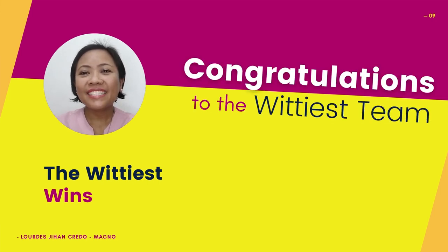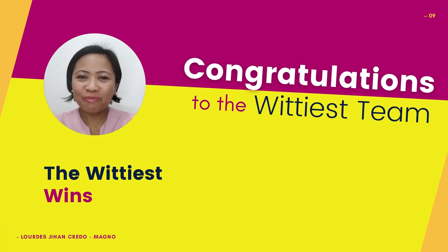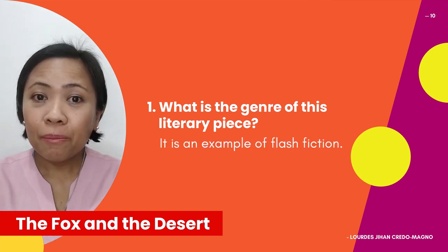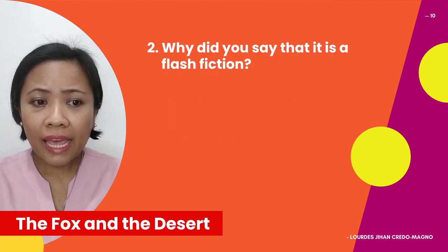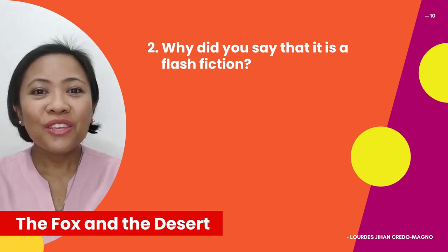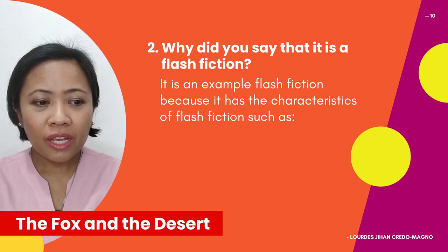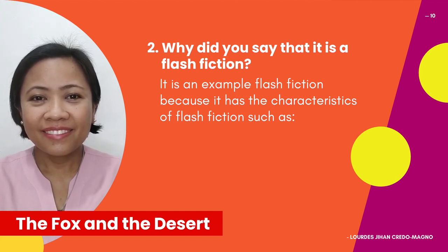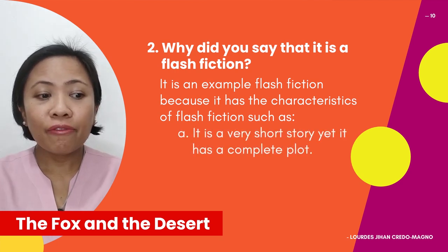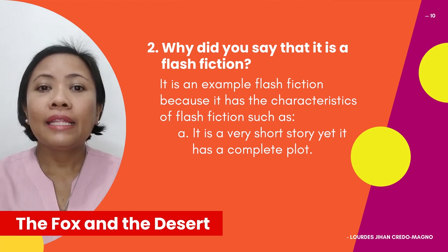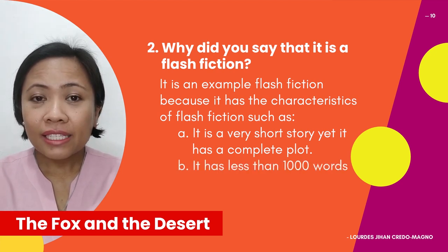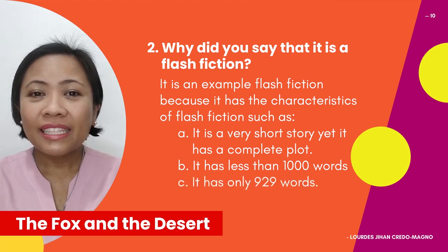Congratulations to the Wittiest Team — two thumbs up, good job! Let's go back to the story, The Fox and the Desert. What is the genre of this literary piece? It is an example of Flash Fiction. It is a Flash Fiction because it has the characteristics: it is a very short story yet has a complete plot with a beginning, middle, and end. It has less than 1,000 words — in fact, The Fox and the Desert has only 929 words.